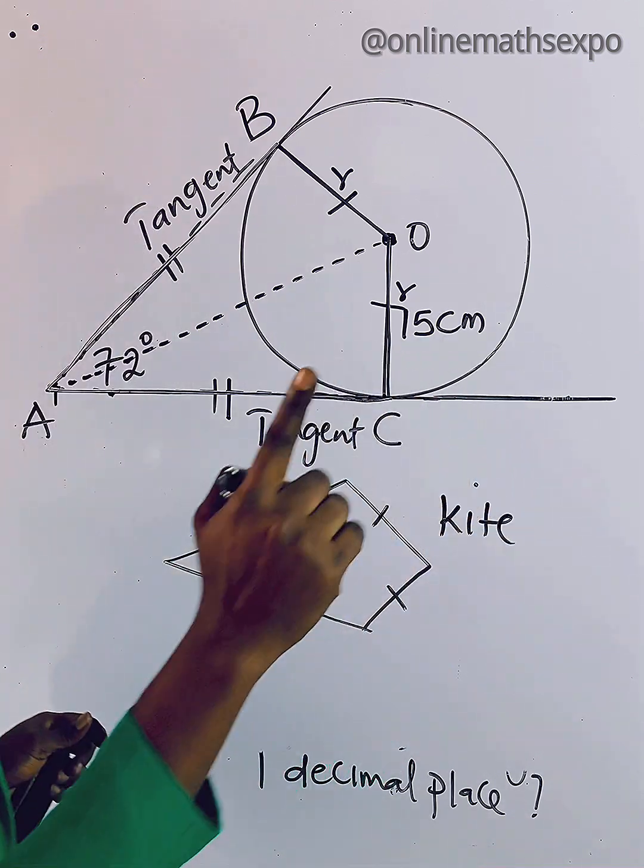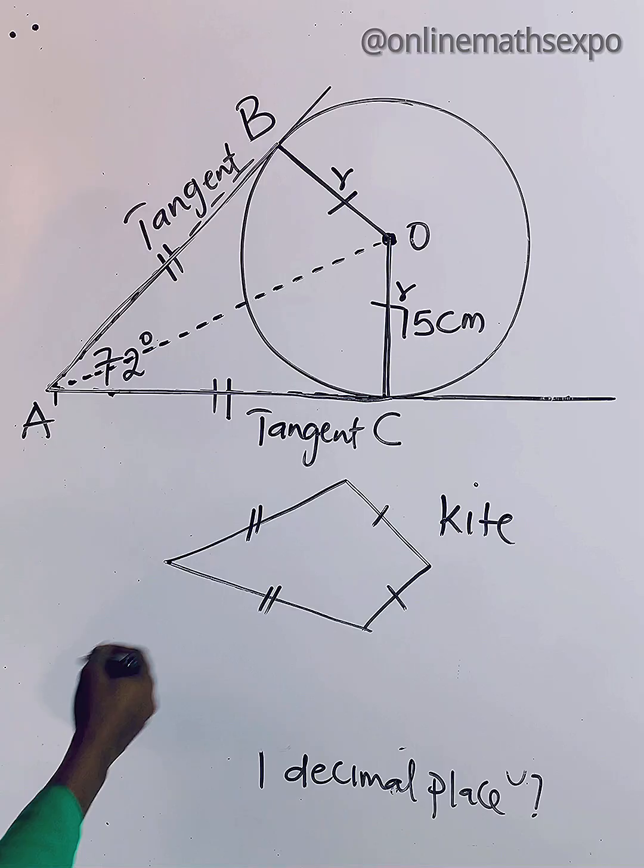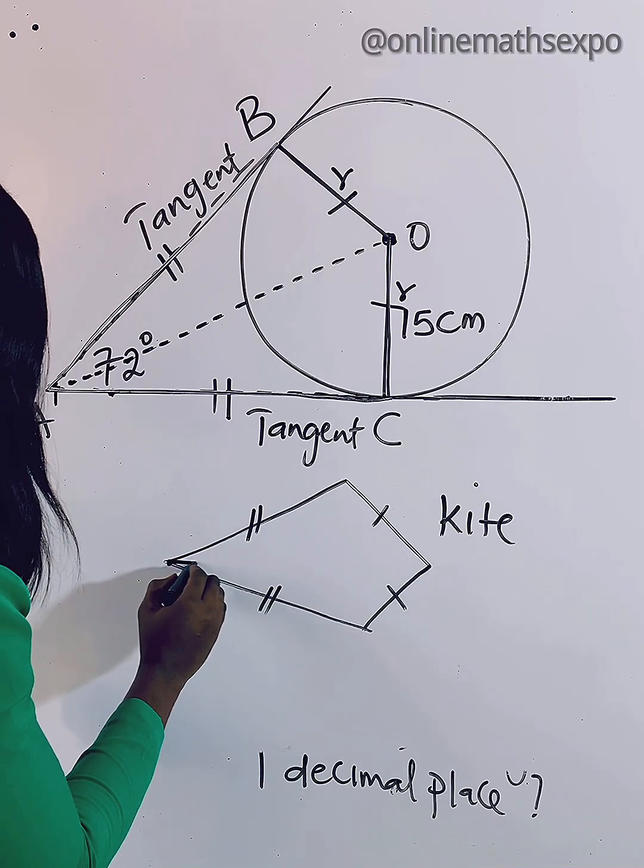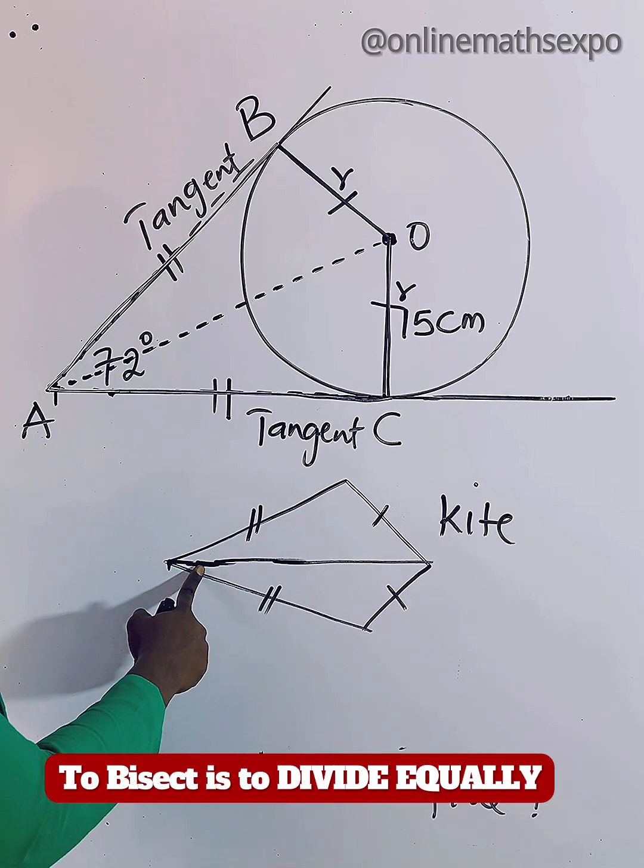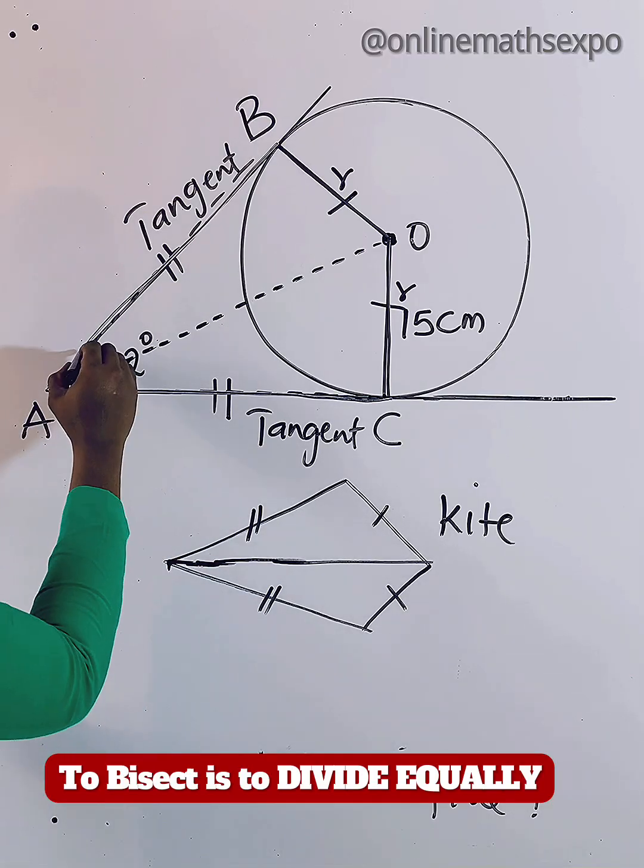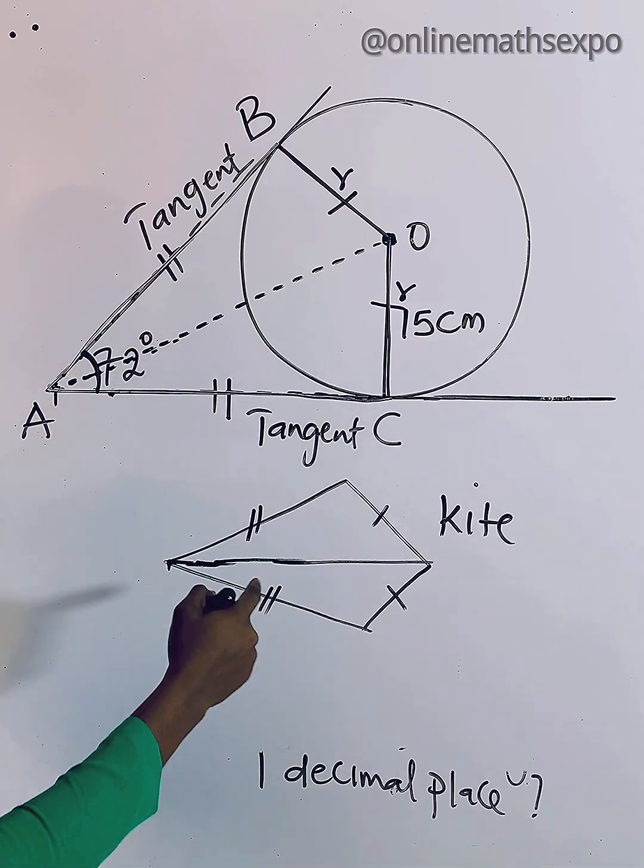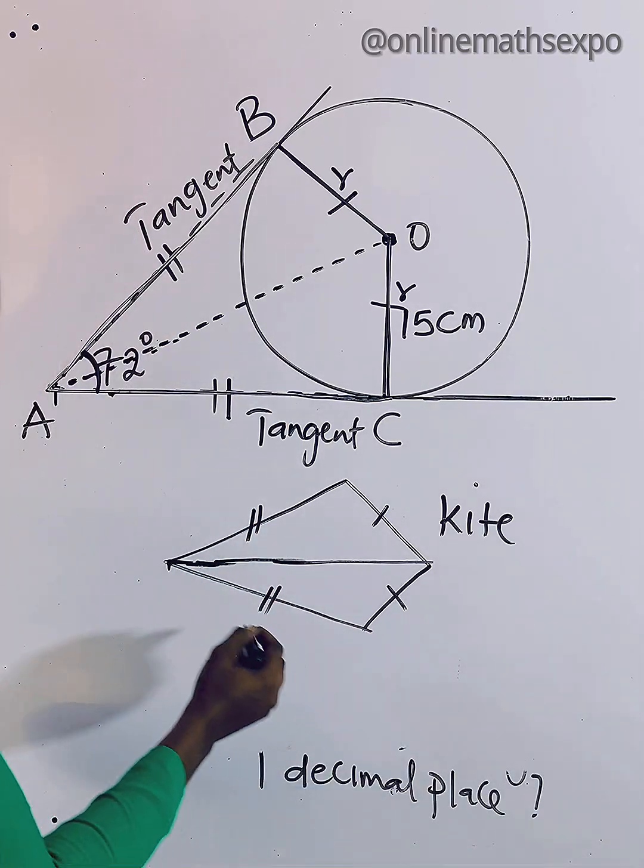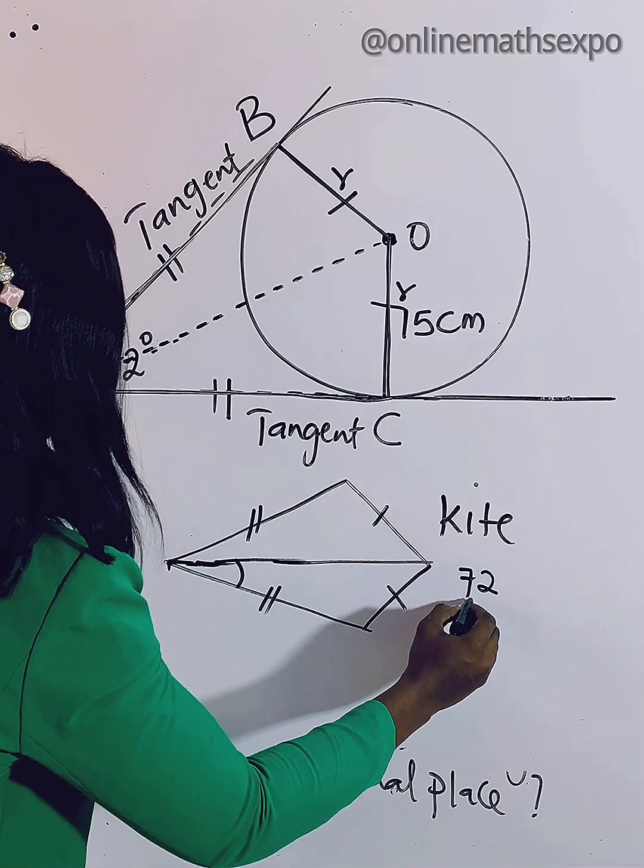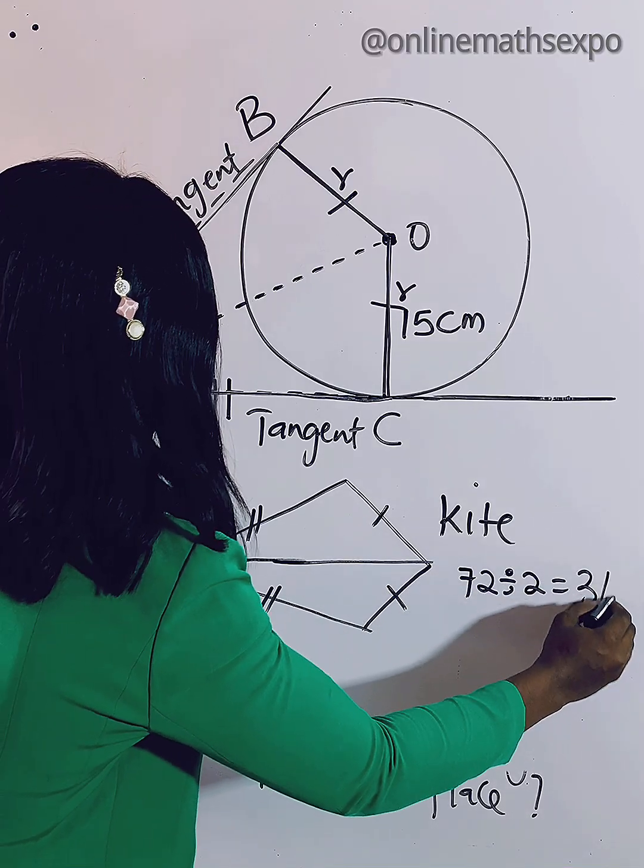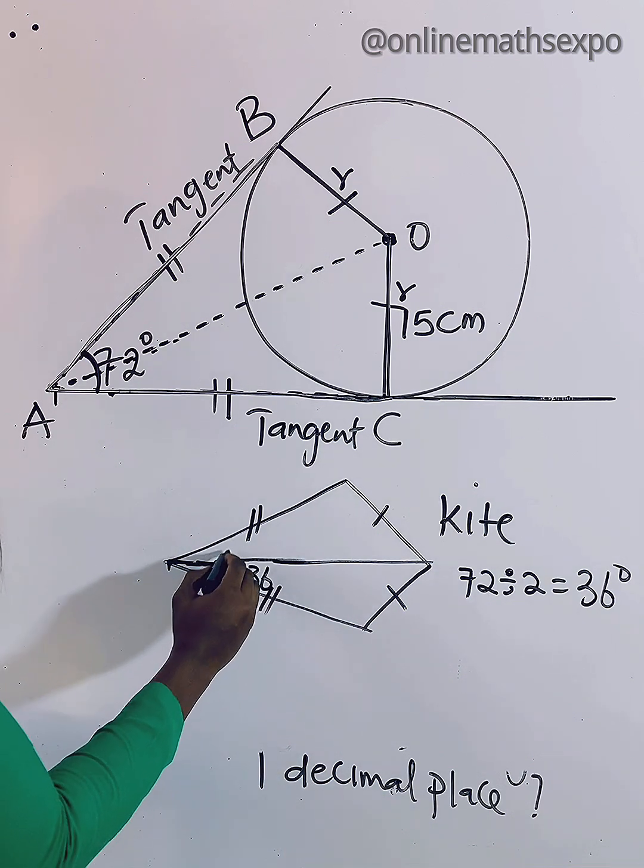If this is a kite, it reminds you of properties of a kite. You know that for a kite, this diagonal line bisects the angle formed at this point. So if it bisects it, remember the total angle here is 72, and this diagonal line bisects it, dividing it equally. It means that this part is going to be 72 divided by 2, which will give us 36 degrees. So here is going to be 36 and here should also be 36.